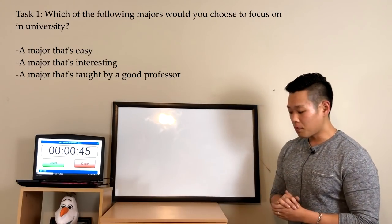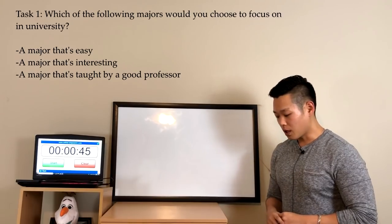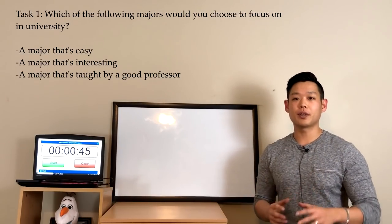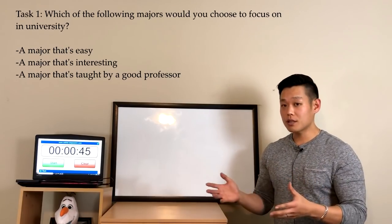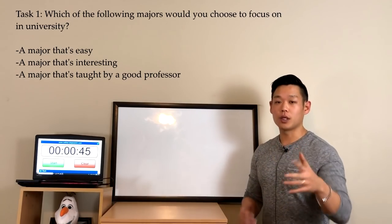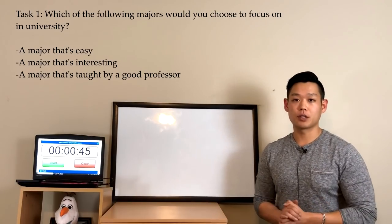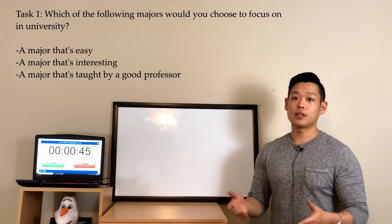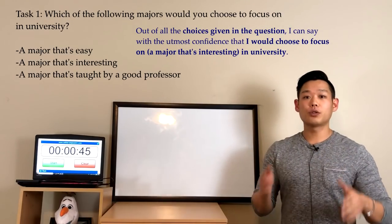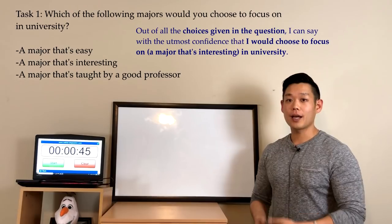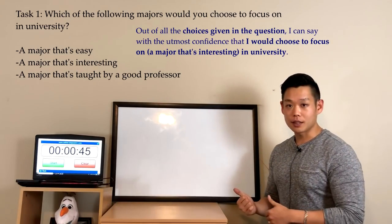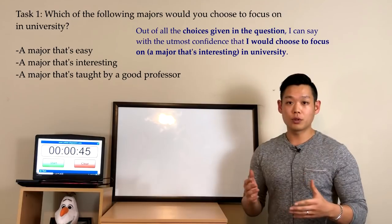The first Task One question is: which of the following majors would you choose to focus on in university — a major that's easy, a major that's interesting, or a major that's taught by a good professor? This question gives us three choices. When in doubt, for any question that gives you three choices, you can always say 'out of all the choices given in the question.' That's the beginning sentence along with my opinion.